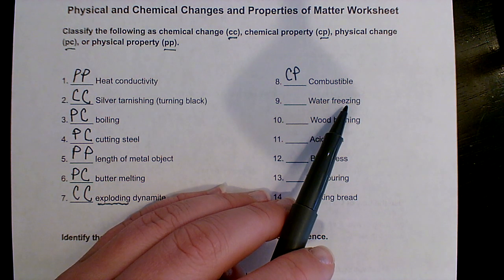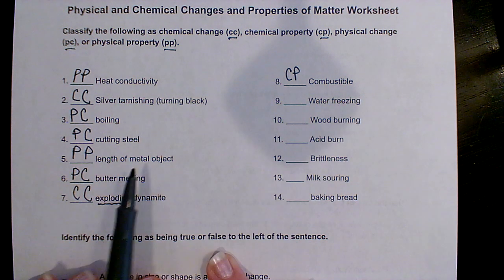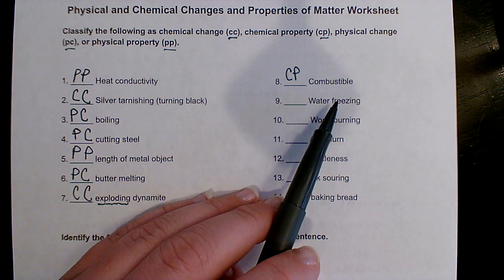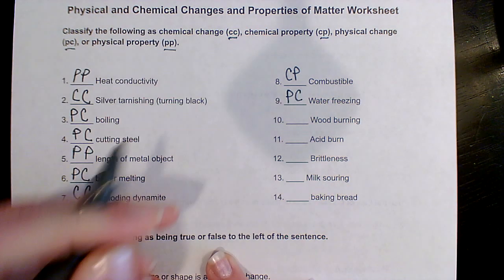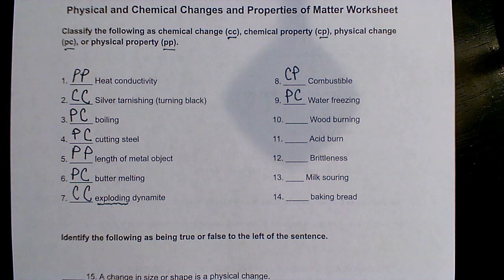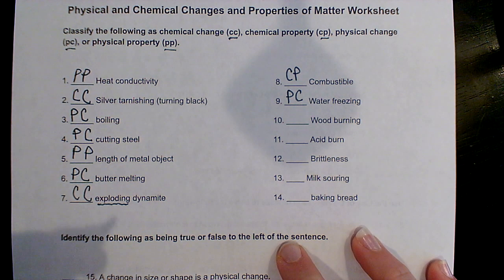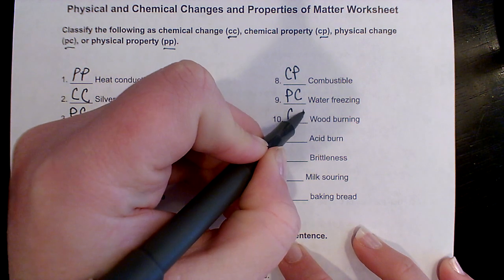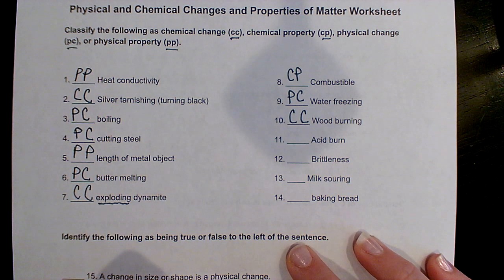Water freezing — freezing is kind of the opposite of melting, and we said melting was a physical change. So freezing is also a physical change. We're changing its state of matter, but we're not changing what it is — it's still water. Wood burning — anything burning, we're changing it from one substance into another substance, so that's a chemical change.